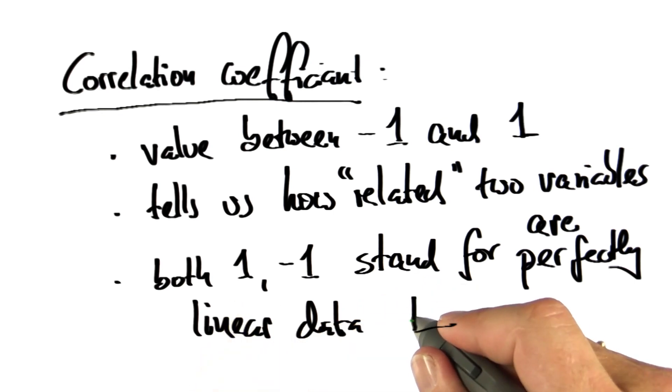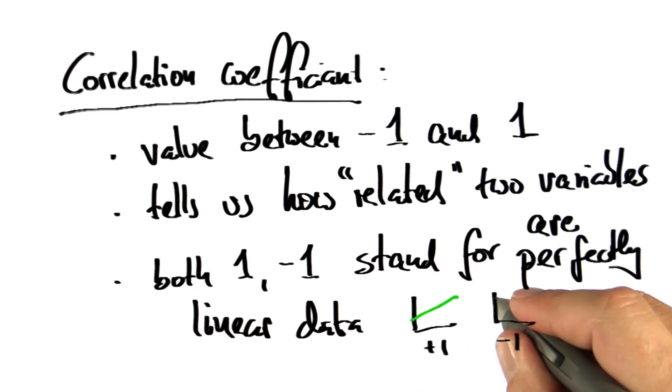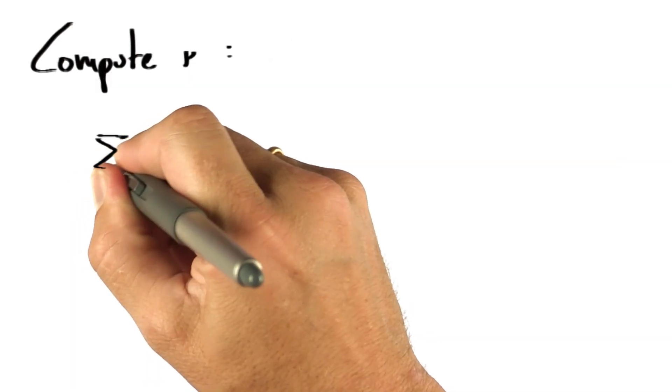In the case of plus 1, we know that the best line increases in x and y simultaneously, whereas for minus 1, we have the inverse effect. So let's compute r.